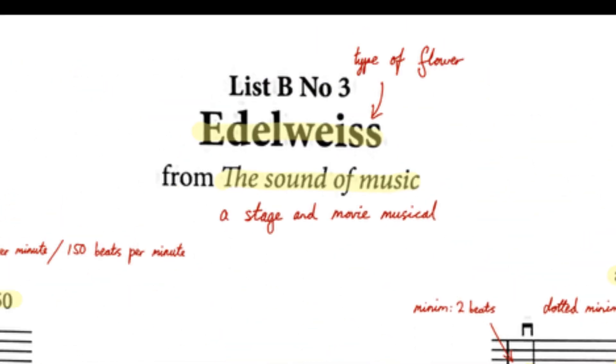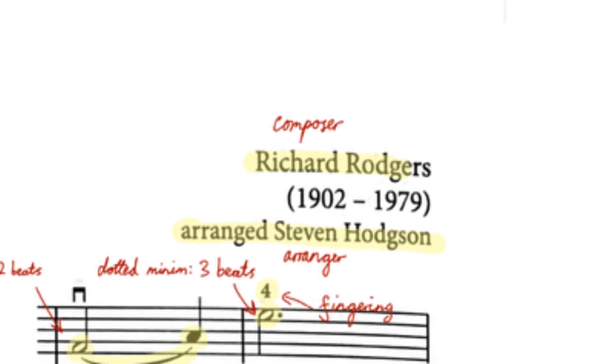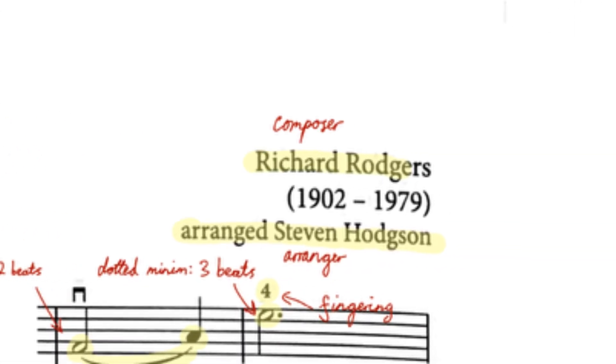On to the title. An Edelweiss is a type of flower, and it is a popular song from The Sound of Music, which is a stage and movie musical. A musical is a play, movie, or show in which the characters sing. As well as the title, we also have the composer and arranger's name at the top of the page. The composer is the person who originally wrote this piece, featured in the musical, and the arranger is the person who made this particular version for two violins, or violin and piano.